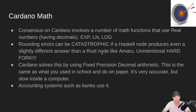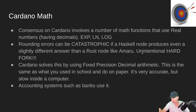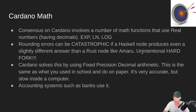Rounding errors could be catastrophic if the Haskell node produces even a slightly different answer than a Rust node like Amaru does. This would result in an unintentional hard fork, which is what you really don't want — the Amaru nodes would run off in one direction happily building their chain, and the Haskell nodes would run off in their direction. This is really important as we move into an eventual state of having more than one node implementation.